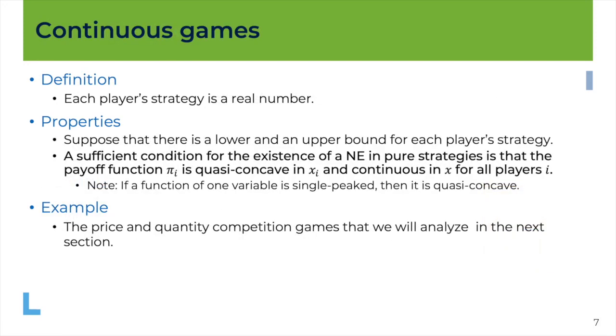Now, last definition, it's about continuous games. Here, it's a game where the strategy set is made of real numbers. And as I say here, the price and quantity competition games that we will analyze later this week belong to this category. If you choose a price, well, you choose a real number between zero and maybe some maximum price, which otherwise, I mean, if you were setting a price above that, nobody would buy your product. So that's what we say here. If there is a lower and upper bound for each player's strategy, then a sufficient condition for the existence of a Nash equilibrium in pure strategies is that the payoff function πi is quasi-concave in xi and continuous in x for all players i.